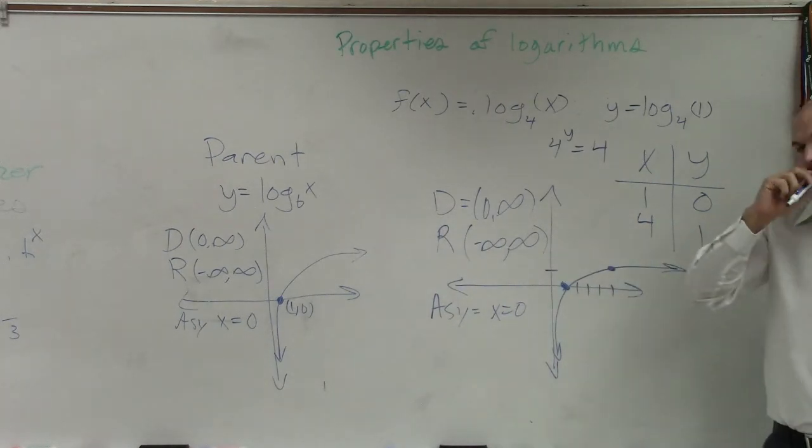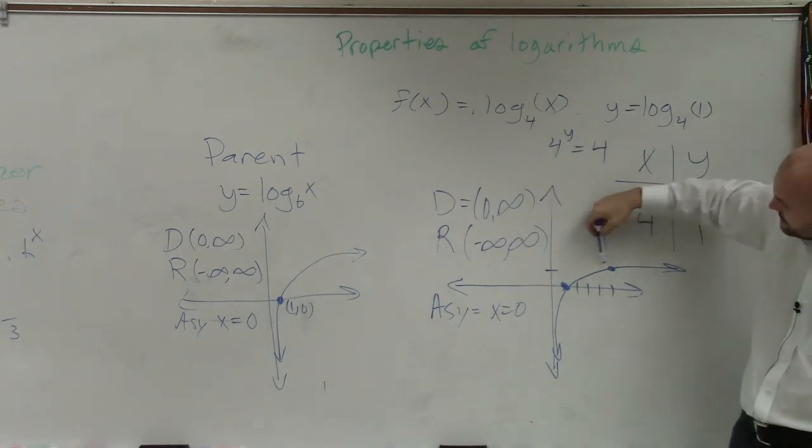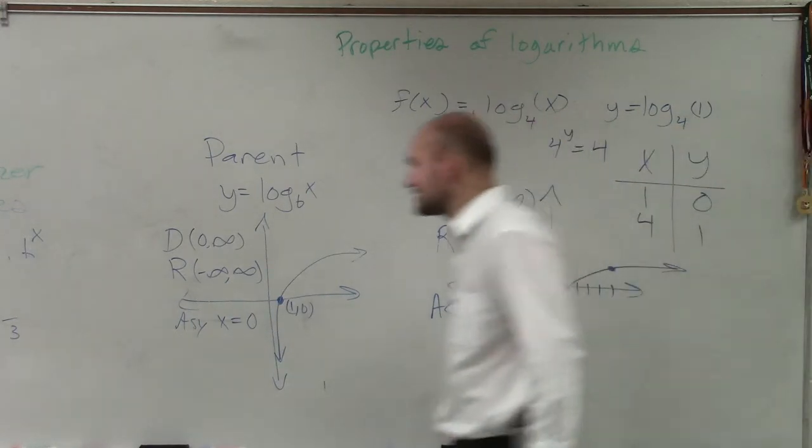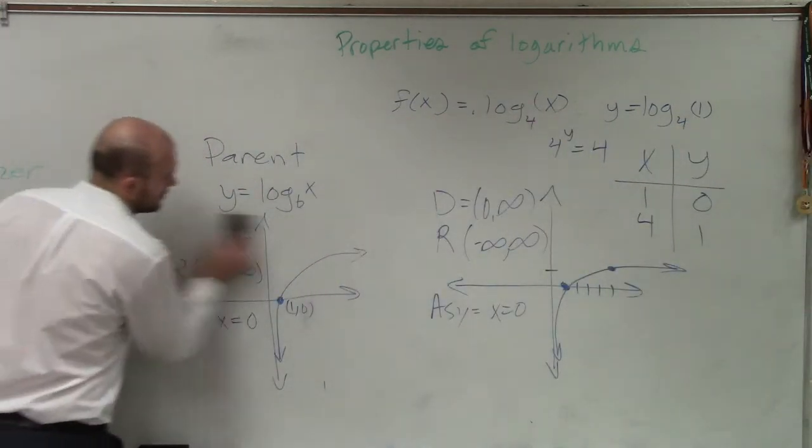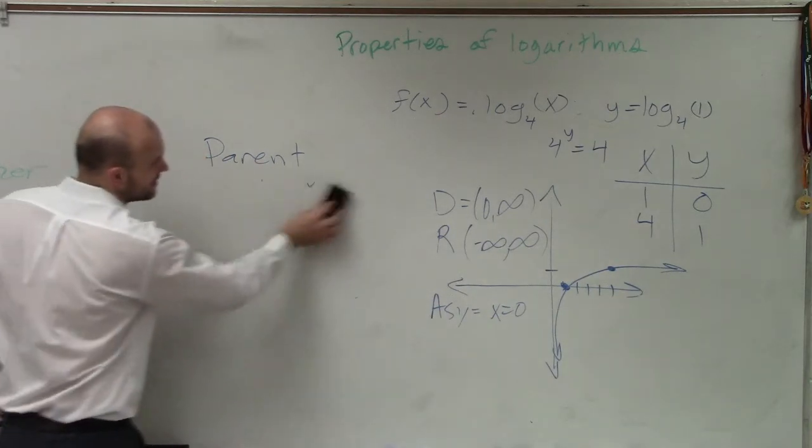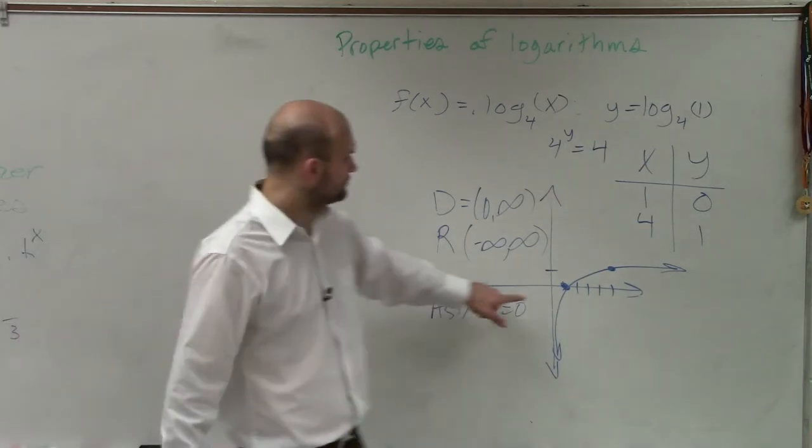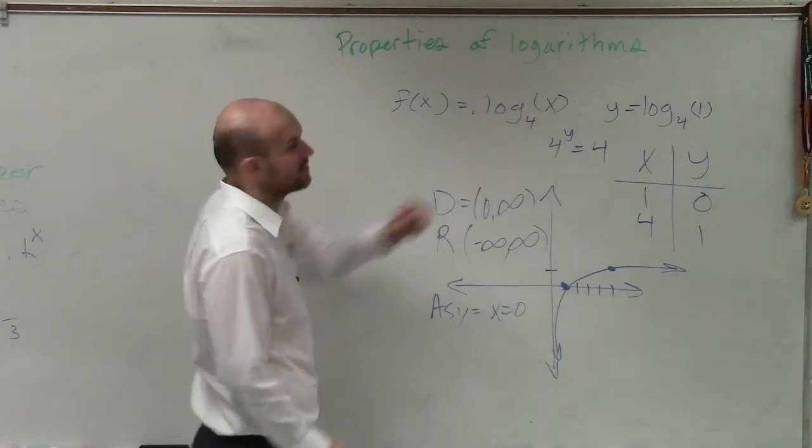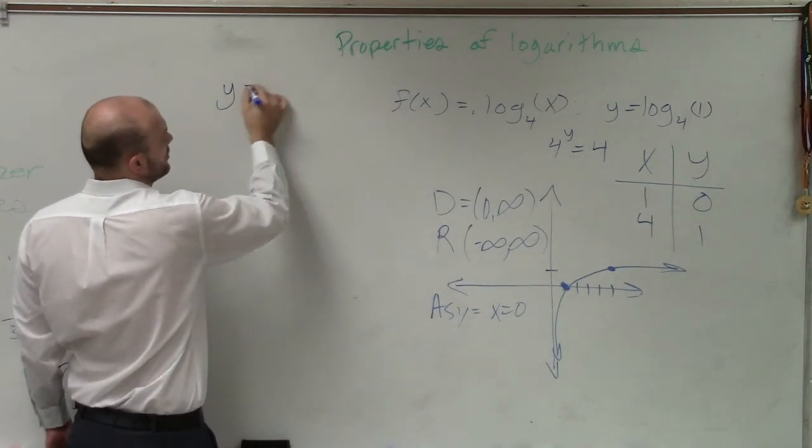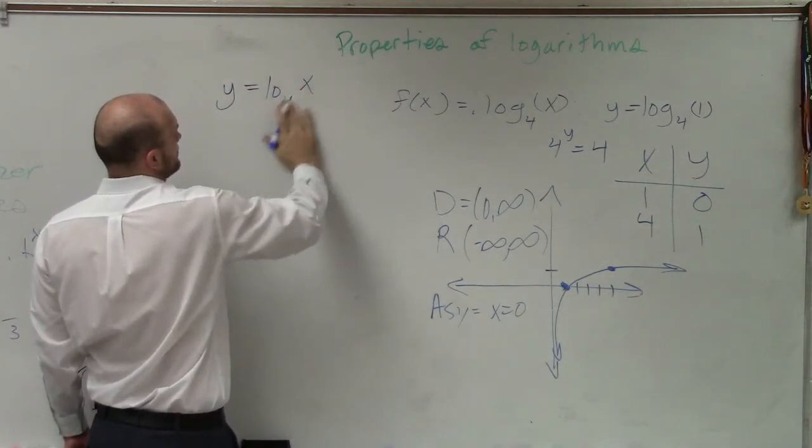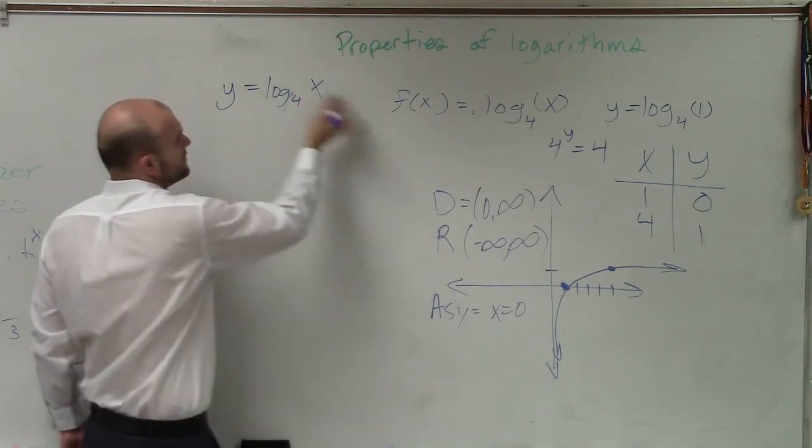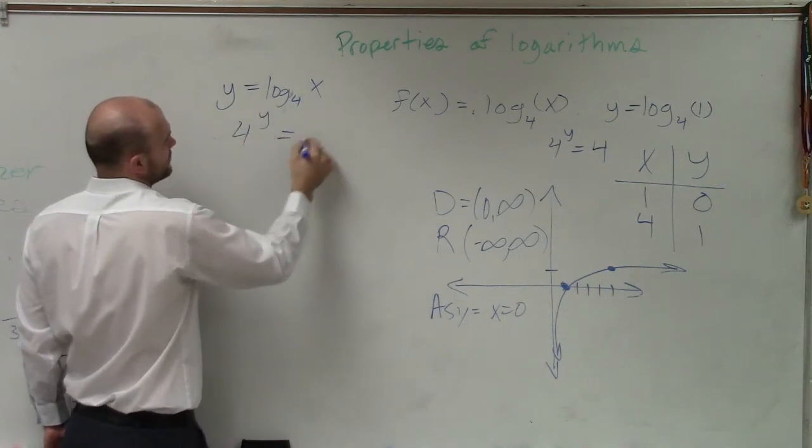Question? Why is it x equals 0 on the line? Because it's a vertical line. This graph is approaching this vertical line. And the best thing I can do to show you that as well is we have to find the x-intercept. But the best thing I can do to show you that is if let's convert this over to exponential form. So I'm going to change this to a y. y equals log base 4 of x. If you guys rewrite this in exponential form, 4 to the y equals x.